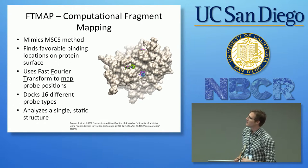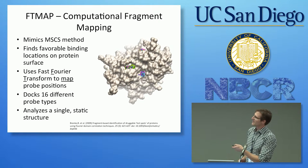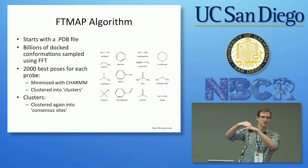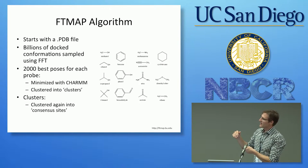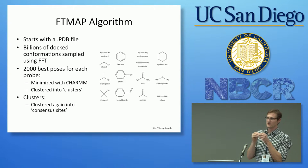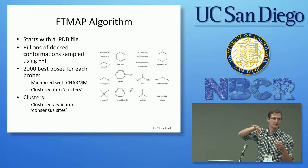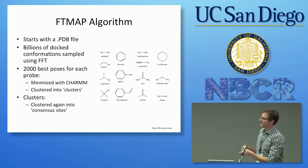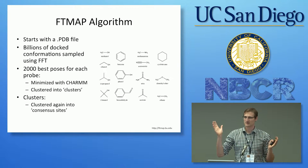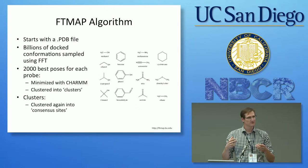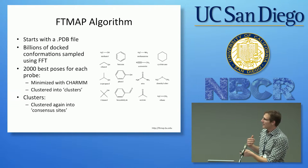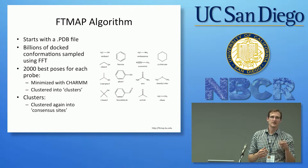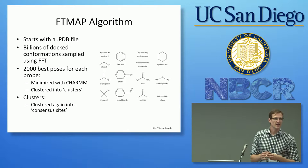They also try it against renin. There are two inhibitors: a peptidomimetic inhibitor and a drug molecule. They ran FTMAP on the crystal structure that had the drug molecule resolved in it, then removed the drug molecule and ran FTMAP again. You can see the probes pretty well recreate the shape of the drug molecule inside the pocket. It seems to recreate these hot spots fairly well.